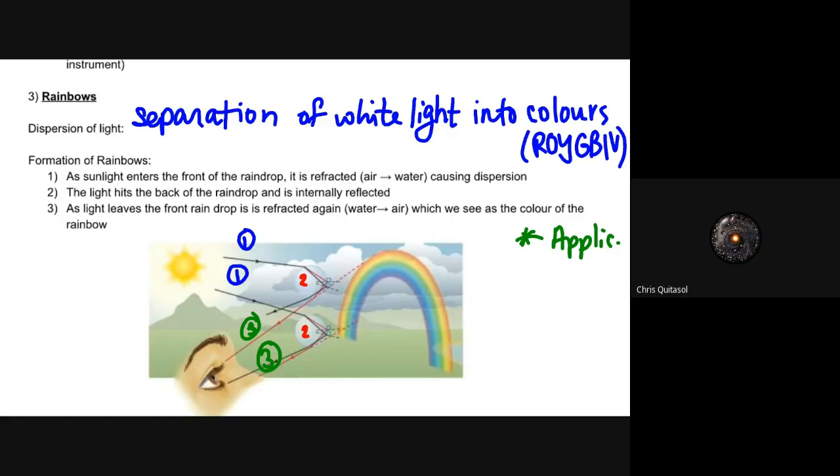And as light leaves the front of the raindrop, it is refracted again from water into air, which is what we see and allows for the colors to be produced from a rainbow. So it's not just so much that white light enters a raindrop and then as a result of that entering, there's dispersion. The dispersion happens as a result of that total internal reflection that creates that rainbow, that dispersion of colors from just plain white light.